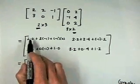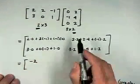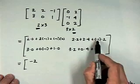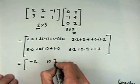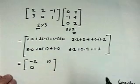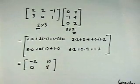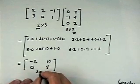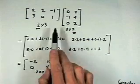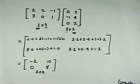Simplifying each entry: the first entry is 0 plus negative 2 plus 0, which is negative 2. Then 4 plus 8 minus 2 is 10. The next entry is 0 plus 0 plus 0. And 6 plus 0 plus 2 is 8. Notice that our result is two by two — the dimensions that remain when the inner numbers cancel.